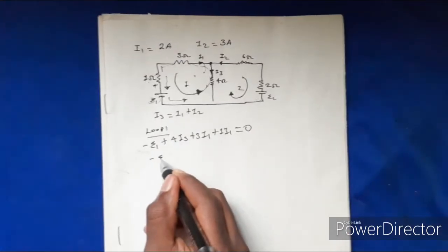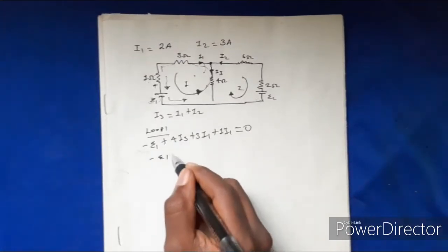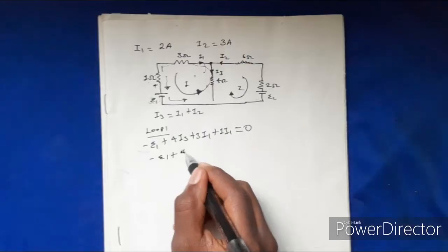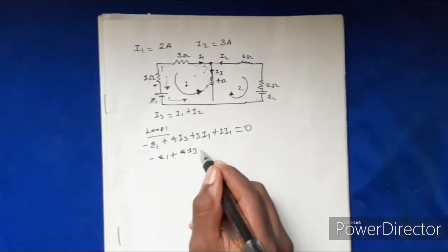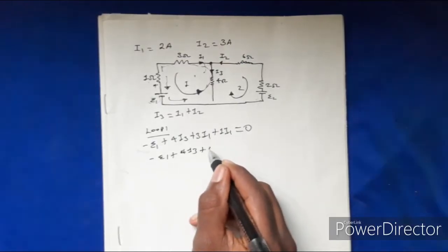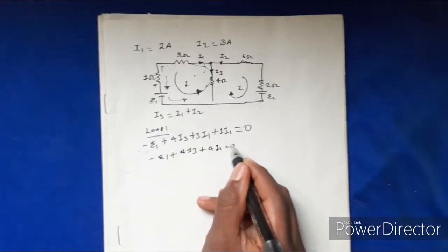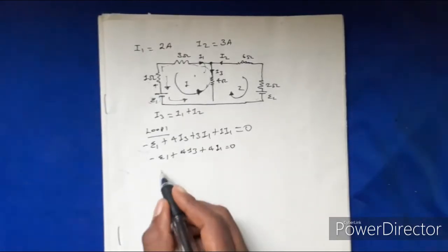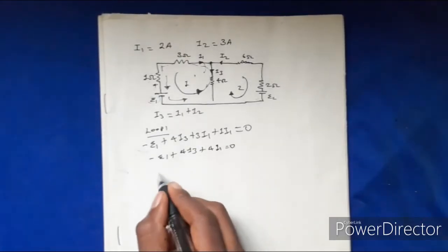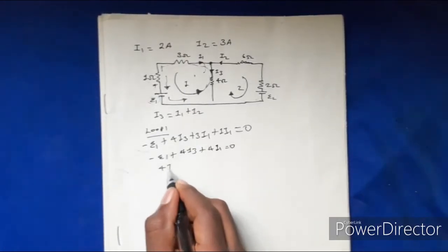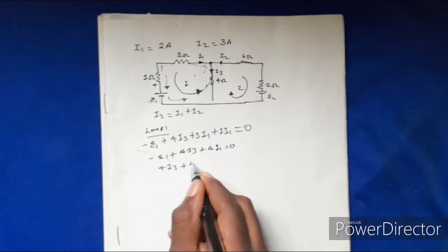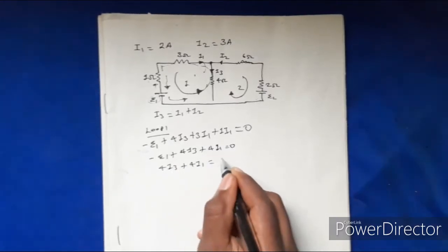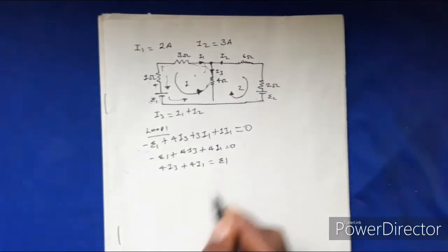Minus I1 plus 4I3 plus 4I1 equals 0. So the equation gives us: 4I3 plus 4I1 equals E1.